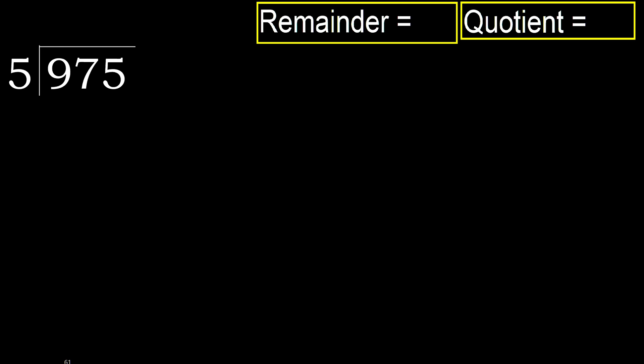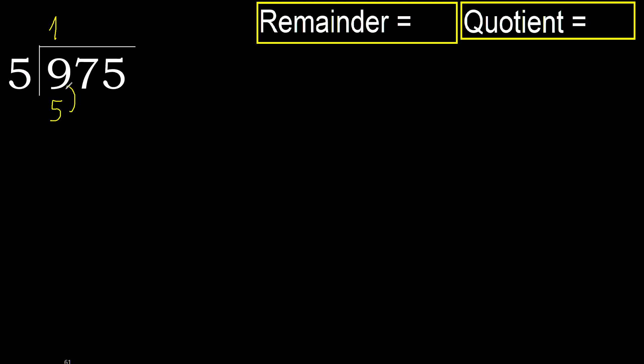975 divided by 5. 9 is not less, therefore work with 9. 5 multiplied by which number is nearest to 9 but not greater? 5 multiplied by 2 is 10 — 10 is greater. Multiply by 1 is 5. It is not greater.